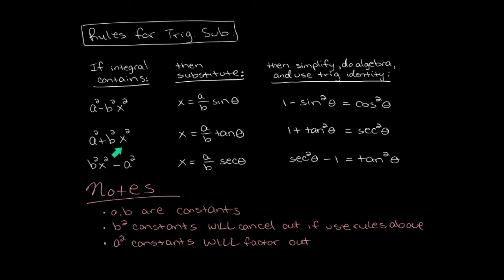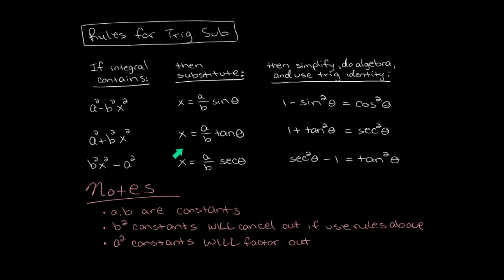Now let's look at the second case: a constant plus another constant times x squared. If you see this in your integral, substitute x equal to a over b times tangent theta. Then x squared is a squared over b squared tangent squared. The b squareds cancel, the a squareds factor out, and you're left with 1 plus tangent squared, which by a trig identity equals secant squared.